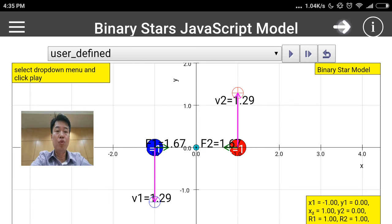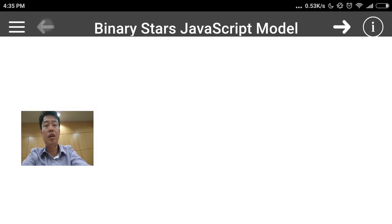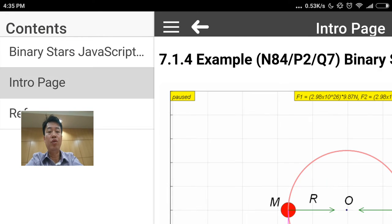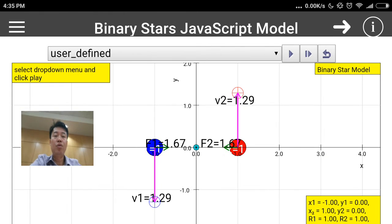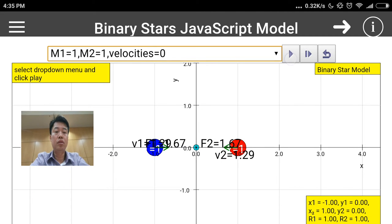You can navigate through the arrowheads or the menu. Going back to the simulation, you can see that this has M1 equals one, M2 equals one, velocities equals zero.